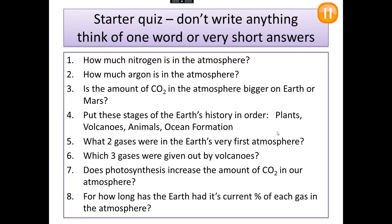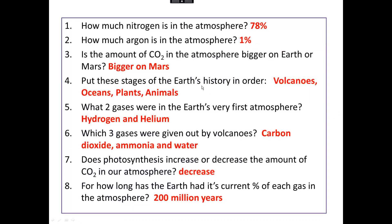Here we go with the answers. Nitrogen is 78% of the atmosphere. Argon is 1% of the atmosphere. The amount of CO2 is bigger on Mars, about 95% — it is only 0.04% on Earth. The history of the Earth's atmosphere was affected by volcanoes, oceans, plants and then animals. The two gases in the very first atmosphere were hydrogen and helium.